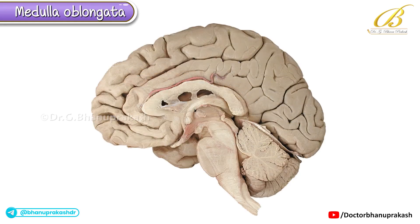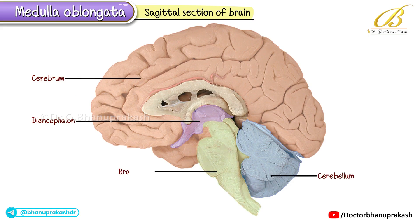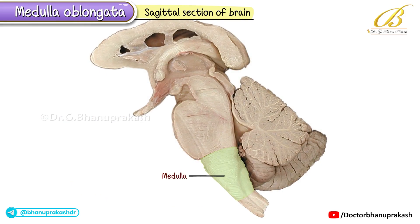Hello, everyone, and welcome to our exploration of the medulla oblongata. In this slide, we're viewing a sagittal section of the brain. Notice the medial surfaces of the cerebrum, the diencephalon, cerebellum, and the brainstem. The brainstem itself is a stalk-like structure that connects the spinal cord to the forebrain, spanning from the posterior commissure down to the lower part of the pyramidal decussation. In this video, we'll be focusing on the medulla oblongata using cadaveric images to visualize its key anatomical features.